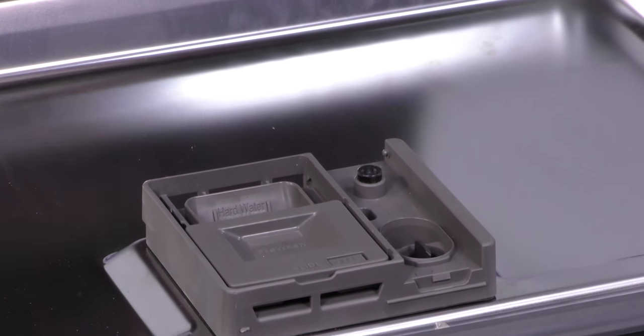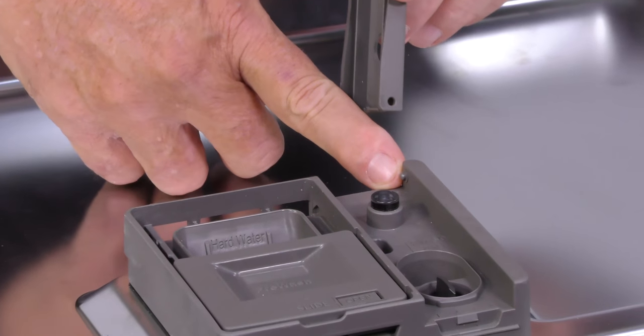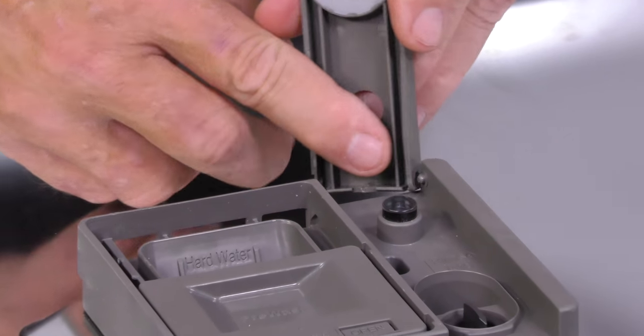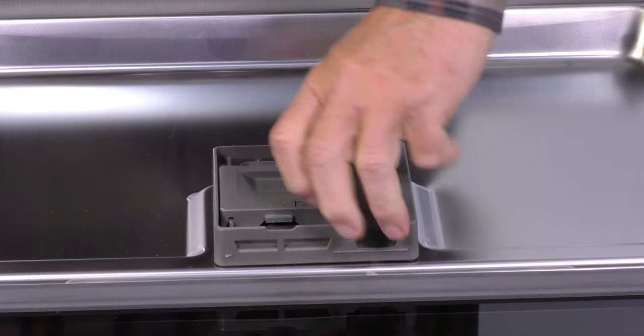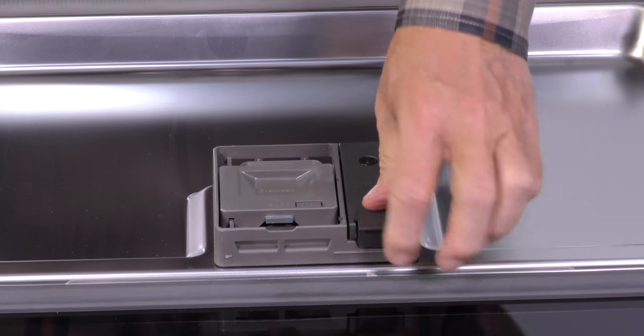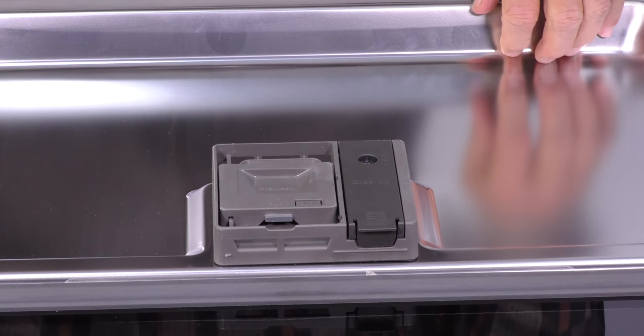When you're replacing the new door, there's an alignment tab on both sides. Insert the hole over the tab and snap it in place, and then make sure you can open and close it. Make sure it's installed properly.